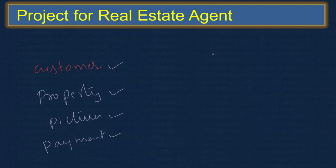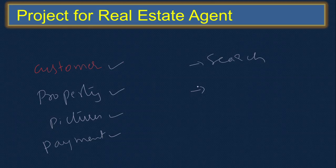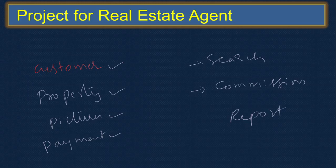Then we show these properties to the required customers, so a search feature is required. Based on the search, we find what data is available and list it out based on the area and property type, and show it to the customers. If the customer agrees, they'll do the agreement, and for that we get a commission. So this company will get the commission, and therefore there is a commission form.